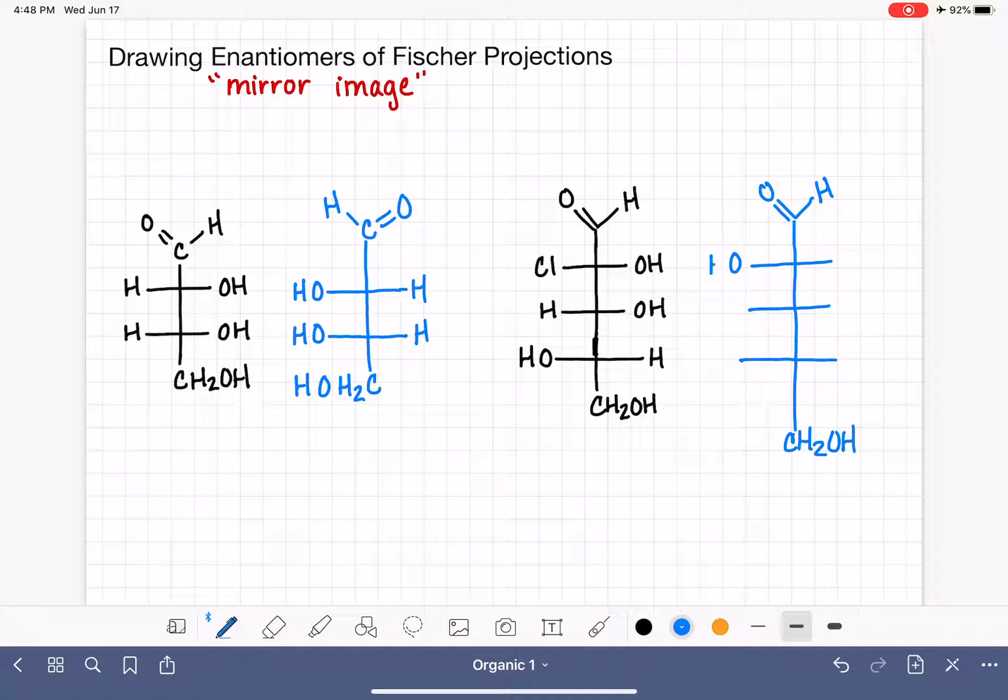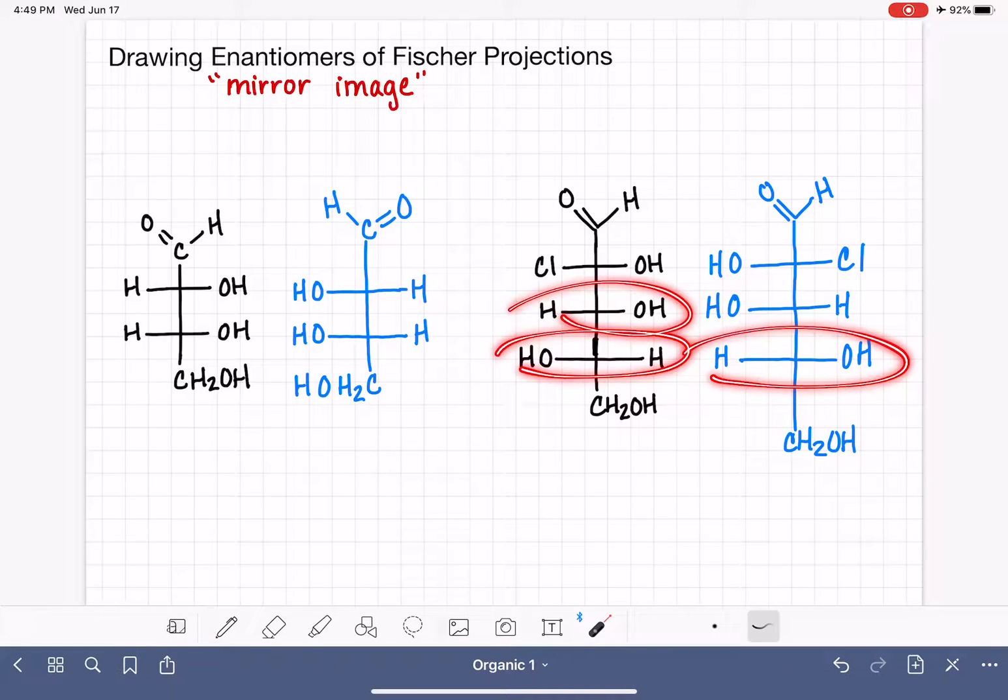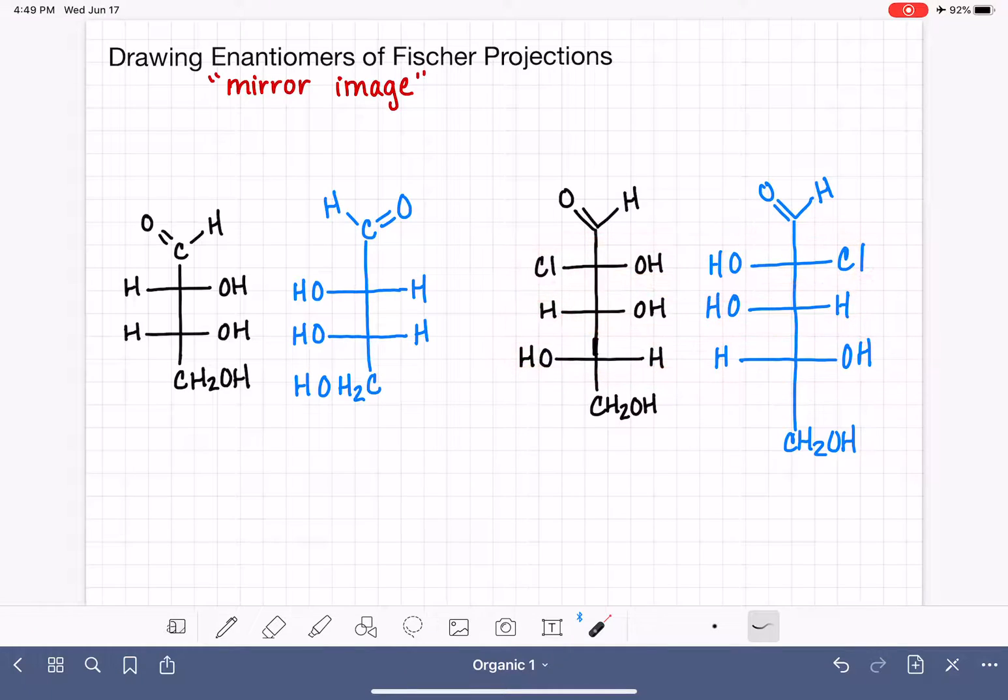So let's finish the enantiomer for this molecule right here. Again, making mirror image of the chiral portions of the molecule. So this is pretty straightforward.